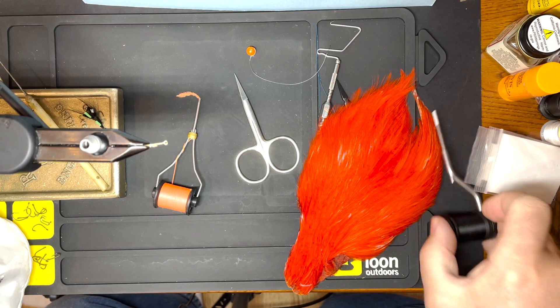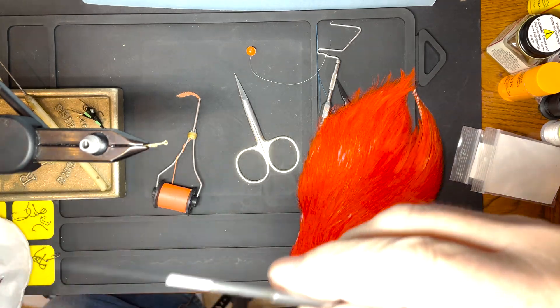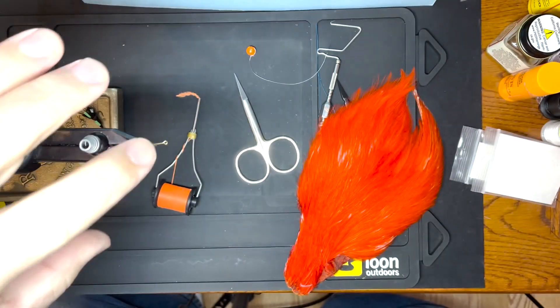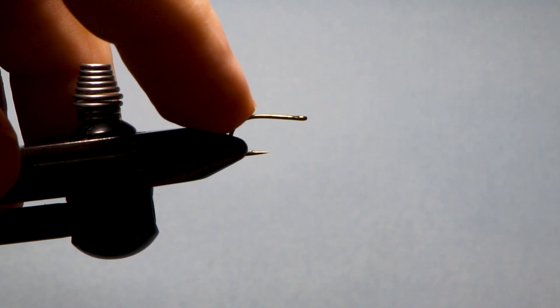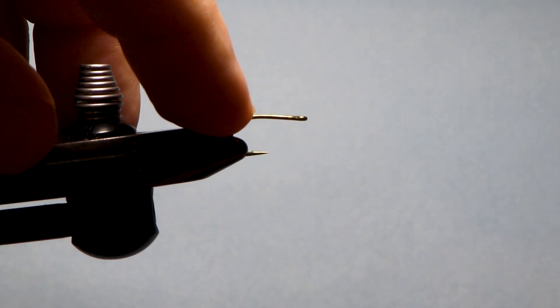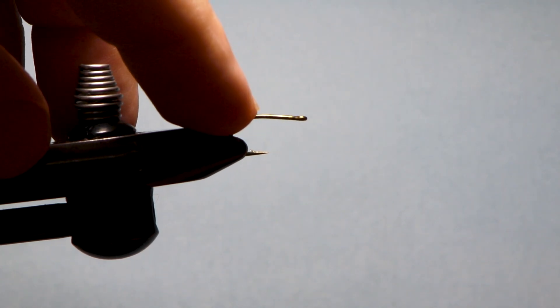Here's how we tie Jimmy's Centerpin Envy. So we've got a wide gap hook. This is a number eight. This is a little big. He ties them number 10 and smaller but this will give you the idea.